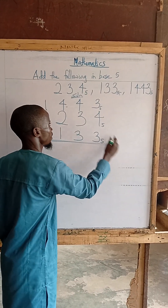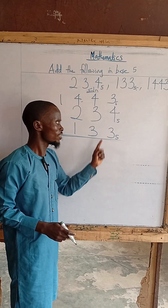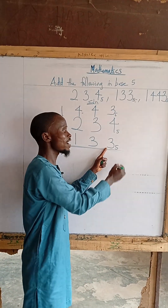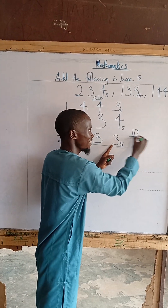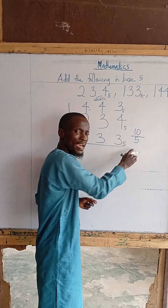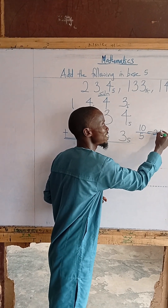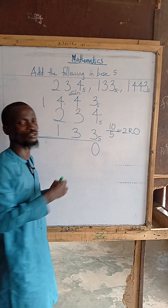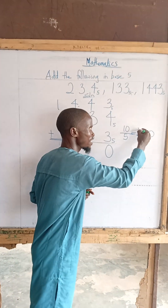Let's add them together. 3 plus 4 gives us 7. 7 plus 3 gives us 10. We write 0 and carry. Since we are in base 5, we divide 10 by 5. How many 5s go into 10? We get 2. We write the remainder 0 and carry the 2.